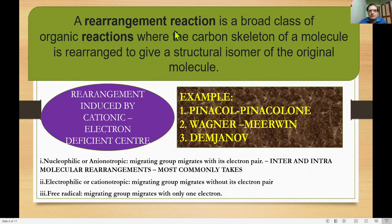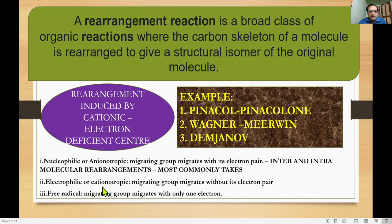To repeat the definition: a rearrangement reaction is a broad class of organic reactions where the carbon skeleton of a molecule is rearranged to give a new structural isomer of the original molecule. Rearrangements induced by a cationic or electron-deficient center will be discussed in detail in forthcoming videos. In nucleophilic or anionotropic rearrangements, the migrating group migrates with its electron pair, and inter/intramolecular rearrangements most commonly occur. In electrophilic or cationotropic rearrangements, the migrating group migrates without its electron pair. In free-radical rearrangements, the migrating group migrates with only one electron.